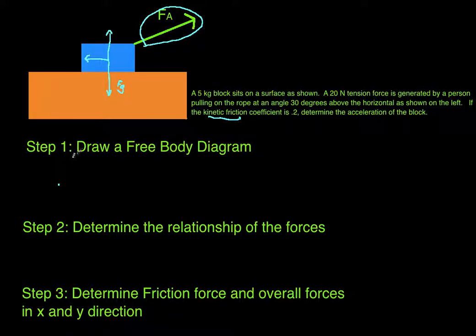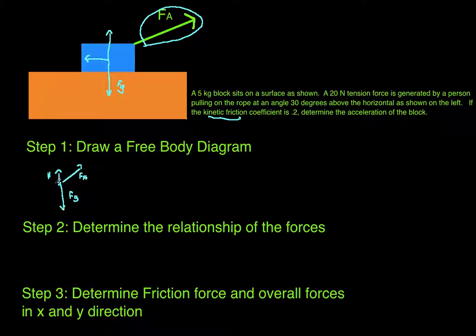So if I take this and translate it into a free body diagram, I'm going to have a few things. The force of gravity pulling straight down, the applied force pulling up and to the right — I'm going to call that F_A. The normal force pulling up — I'll call that N (you might use R if you're taking IB). And then coming out to the left, we're going to have the force of friction.